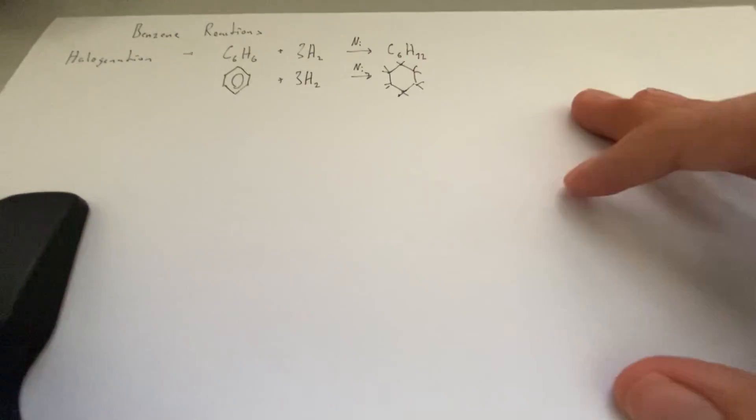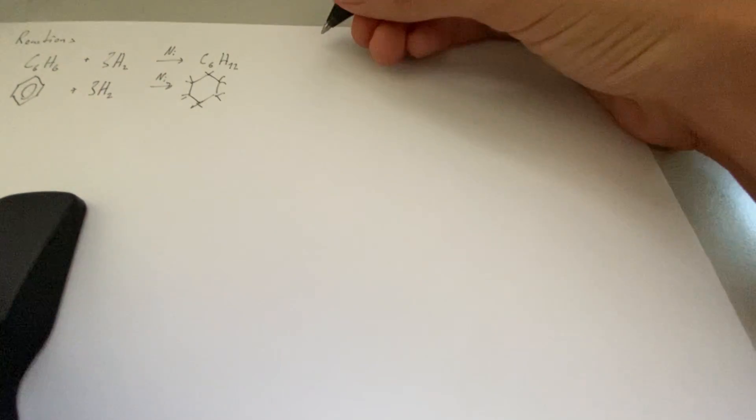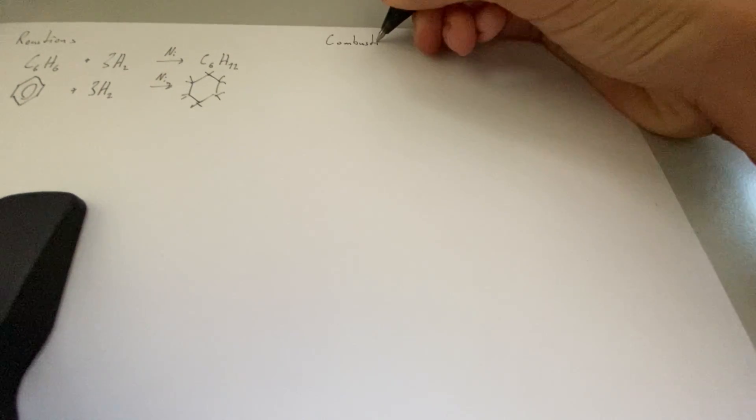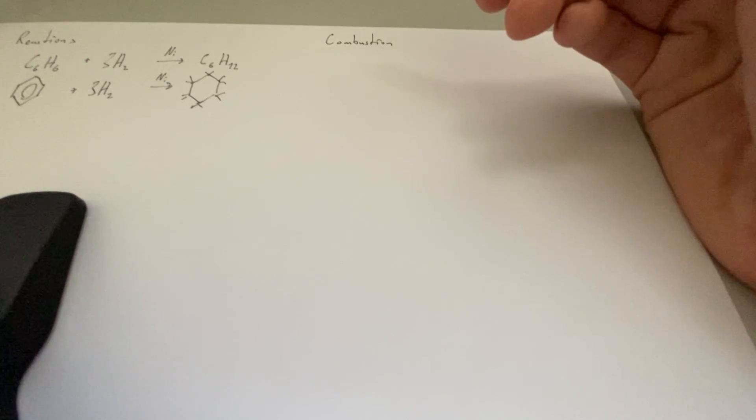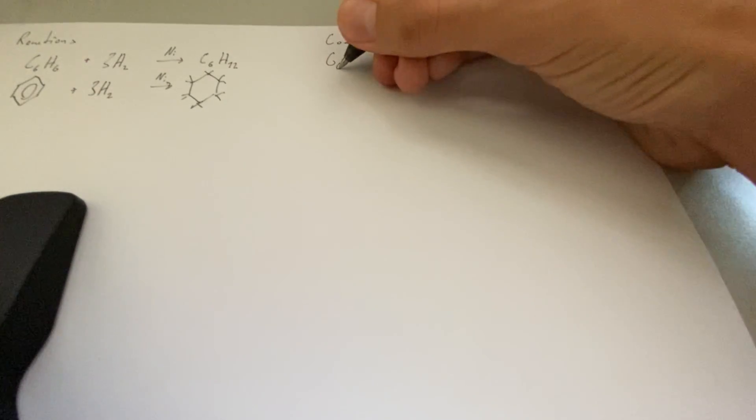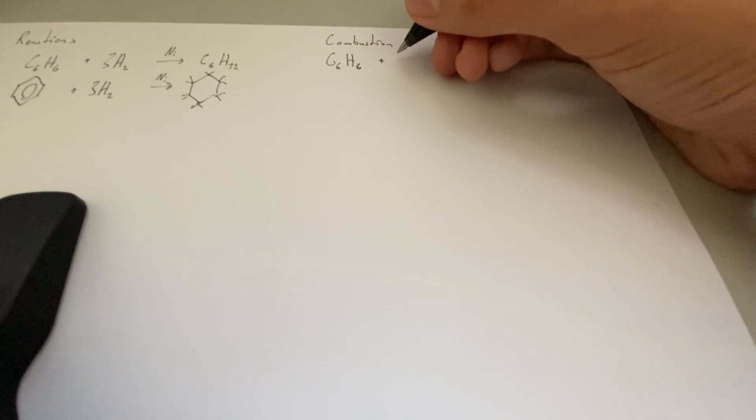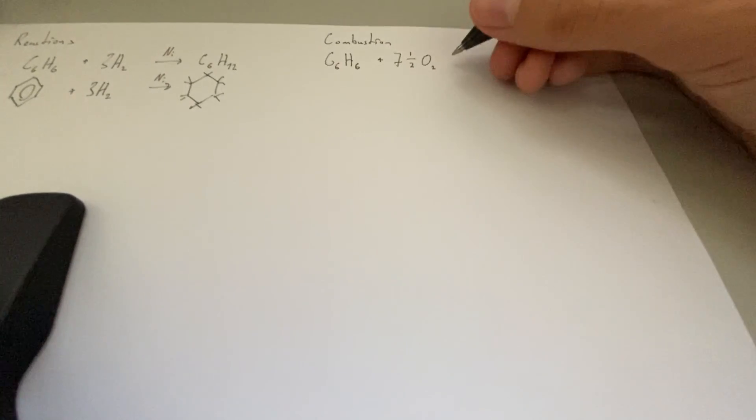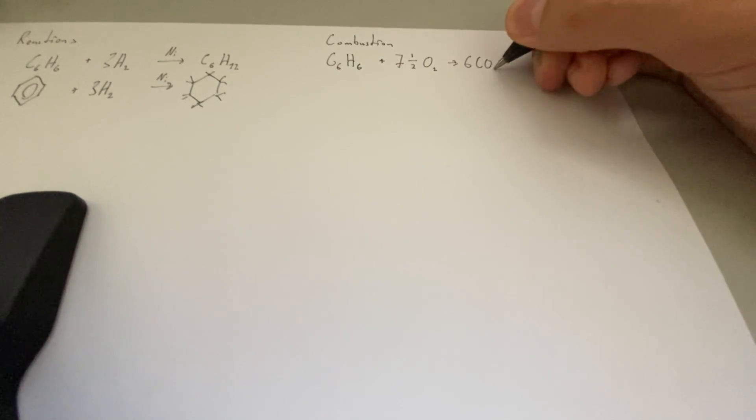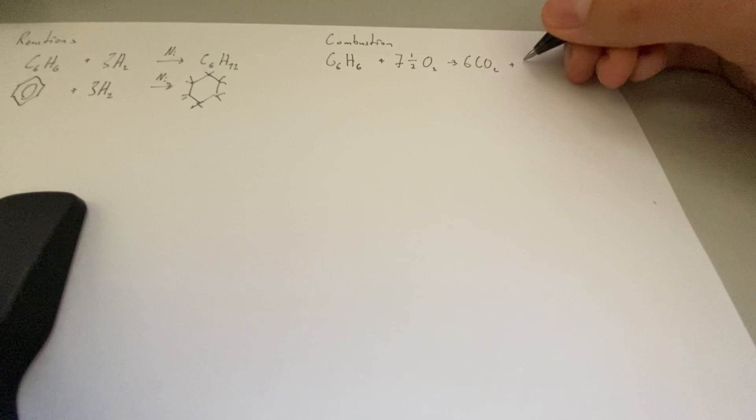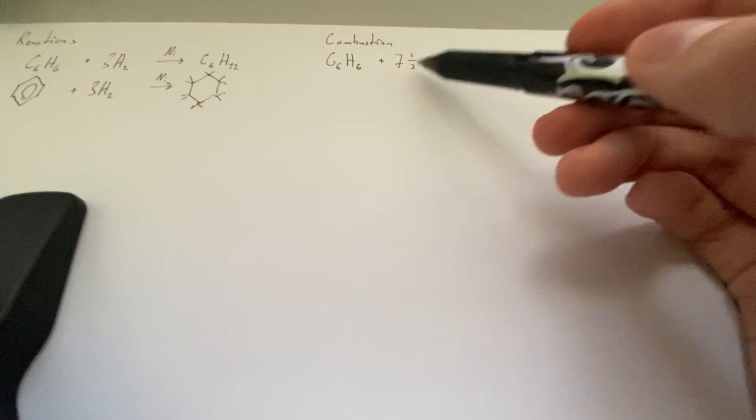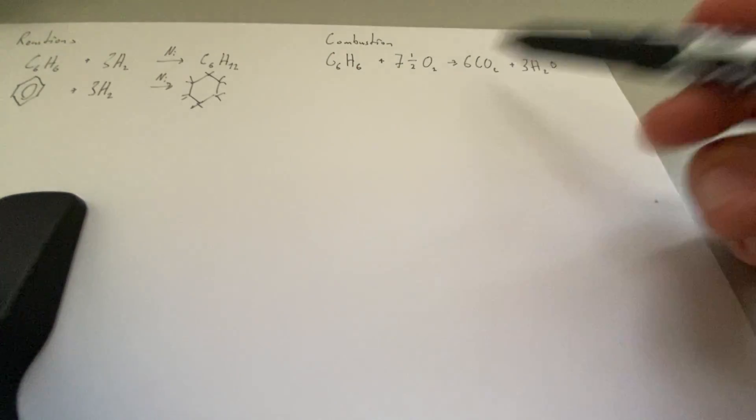Next we have combustion, and that doesn't actually have a mechanism either. So we'll just do C6H6 plus 7.5O2 gives 6CO2 plus 3H2O. We're adding oxygen, it's being burnt in oxygen, it produces carbon dioxide and water.